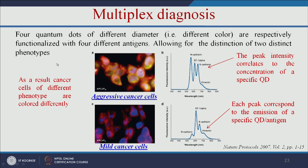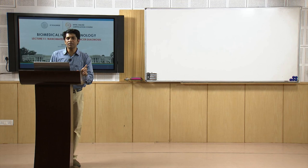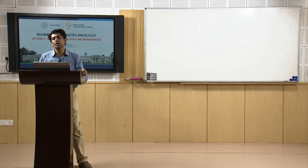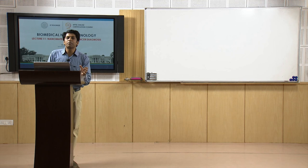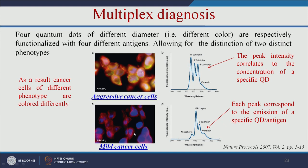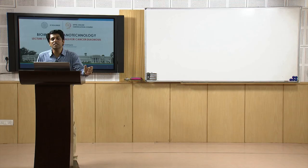In multiplexed diagnosis, four quantum dots have different diameters — different colors — each functionalized with four different antigens. If a cancer cell is expressing four different markers or receptors, the quantum dots go and bind to the four respective markers. If all four give fluorescence, the person is in the advanced stage of cancer. If only two or one gives a fluorescence signal, the person is in the early stage — so we can distinguish early stage from advanced stage using this multiplexed diagnosis.